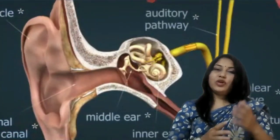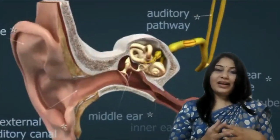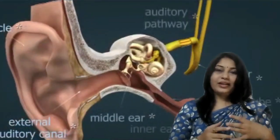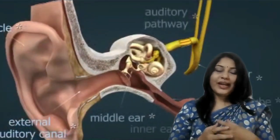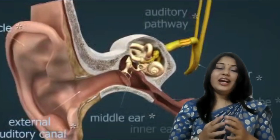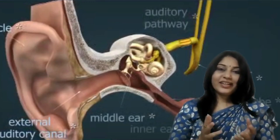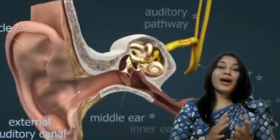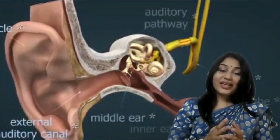The first part, which we see on the outside, is the pinna or auditory canal — this is our external ear, the part we can see from outside.